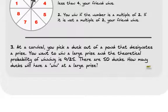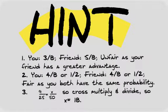Remember, set up proportions. That's usually the best way to solve for these guys. Well, the first one, you have three eighths and your friend has five eighths. And it's unfair because your friend has a greater advantage. Well, the second one is you have four eighths or one half and your friend has four eighths or one half. And it's fair because you both have the same probability. Well, if you think about it in the ducky award, it's nine out of 25, X out of 50. How do you go from 25 to 50? 25 to 50 is times two. So nine times two is 18.